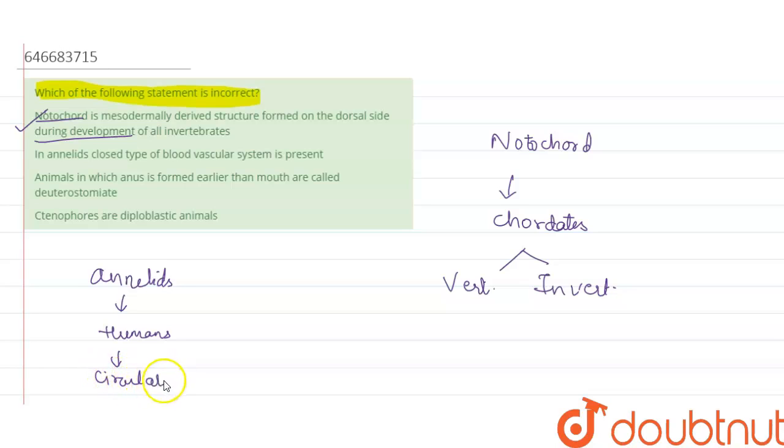That means how we have a closed circulatory system and the blood flows in proper vessels, similarly annelids also. It is there, so yes it is also correct.